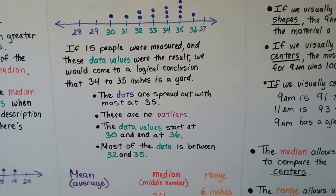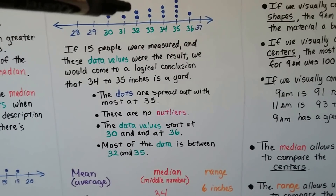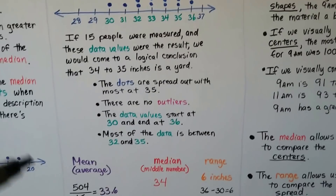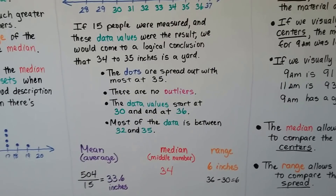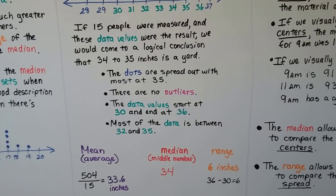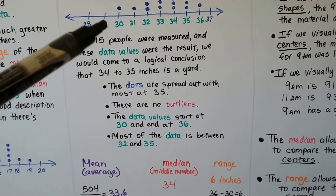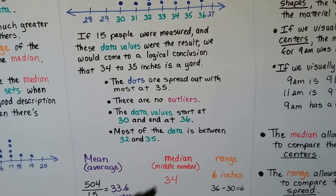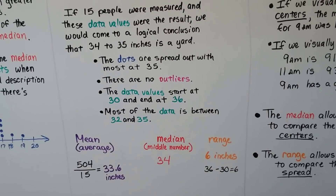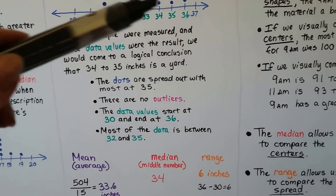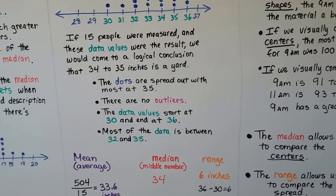The mean — the average — when we total all of these numbers up: 30 plus 31 plus 32 plus 32, etc., we get 504 and we divide it by the 15 people that were measured. We get 33.6 inches as our mean. The median would be the middle number; we write these in order from least to greatest and the middle number would be the median — that's 34. And the range is 6 inches: 36 minus 30 equals 6.